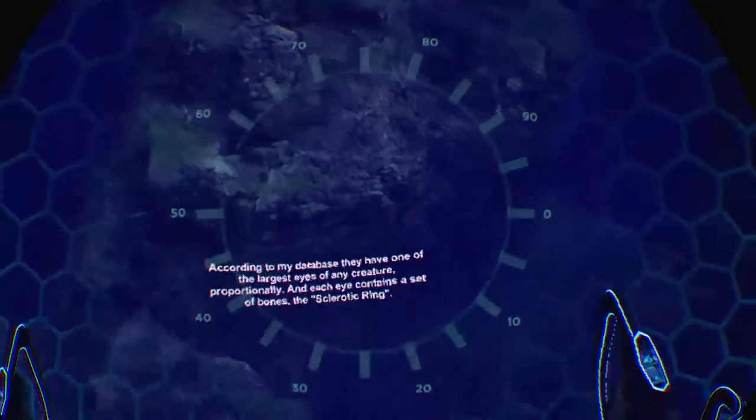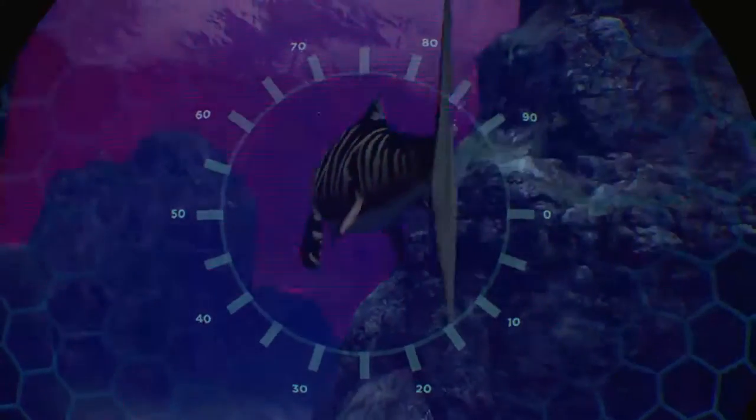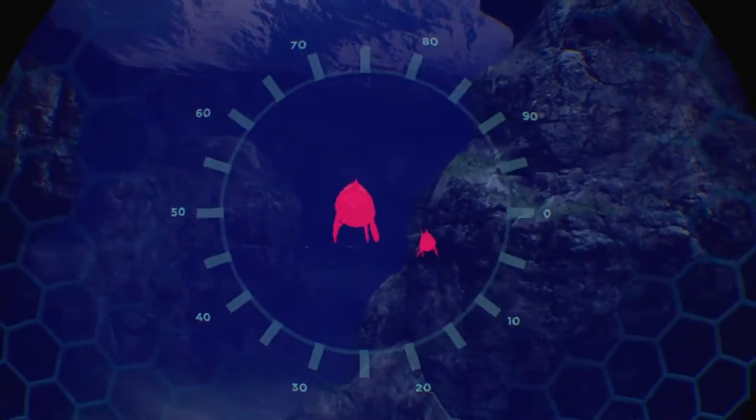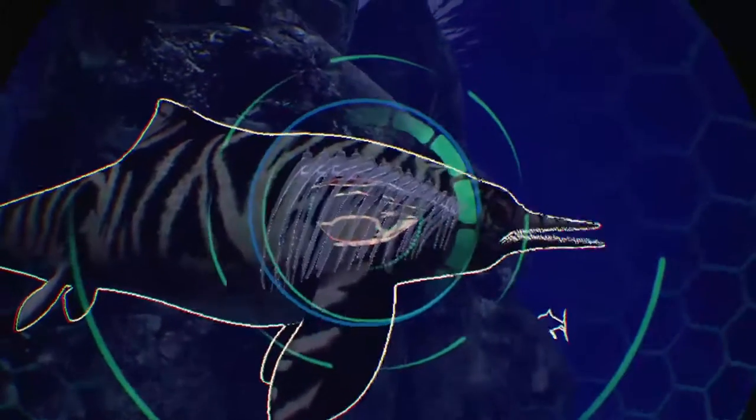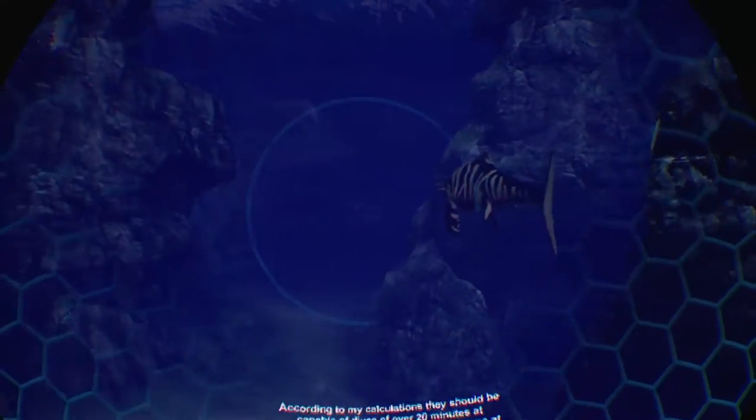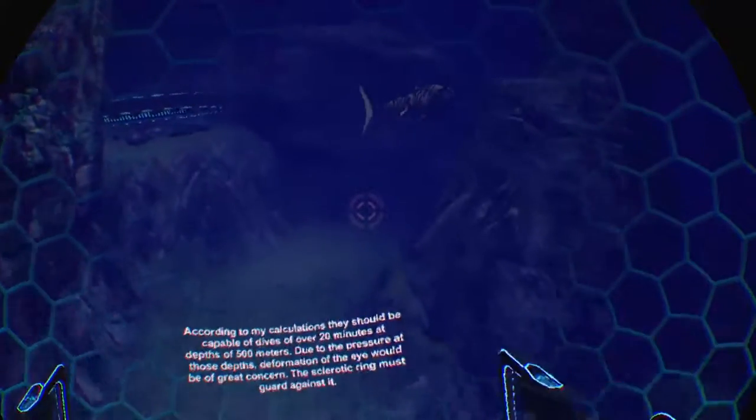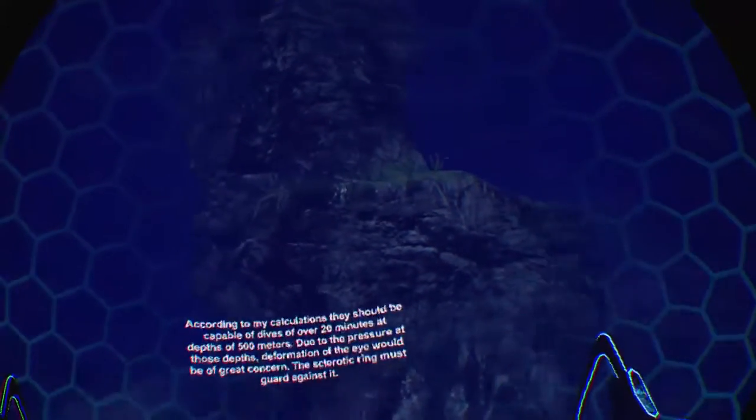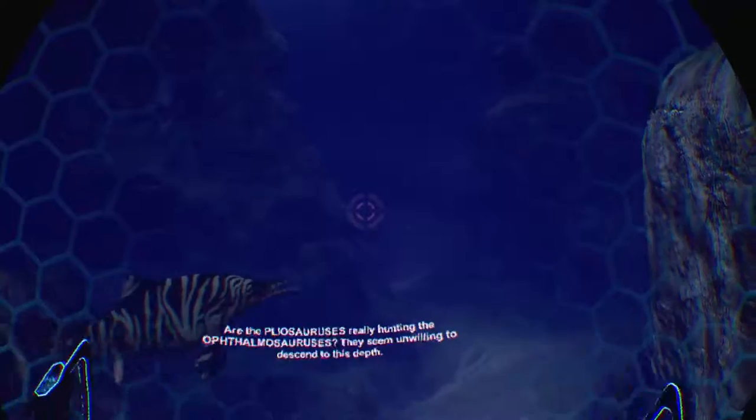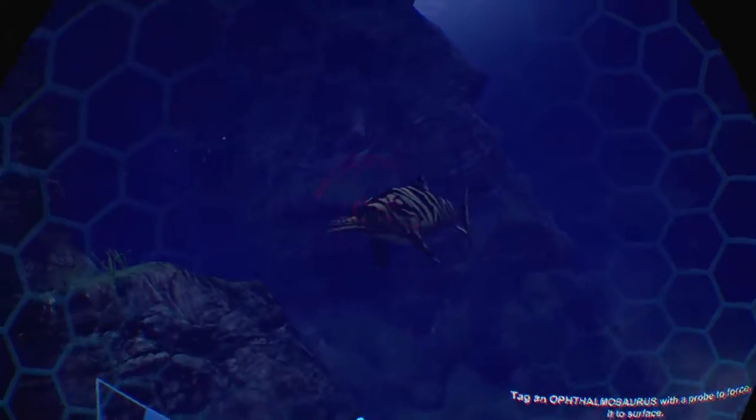The eye contains a set of bones, the sclerotic ring. If we can determine how deep they can dive, it will give us a good idea of how bones are used. An echography scan of its lungs should give us a sense of how low they can go. According to my calculations, they should be capable of dives of over 20 minutes at depths of 500 meters. Due to the pressure of those depths, deformation of the eye would be of great concern. The sclerotic ring must guard against it.